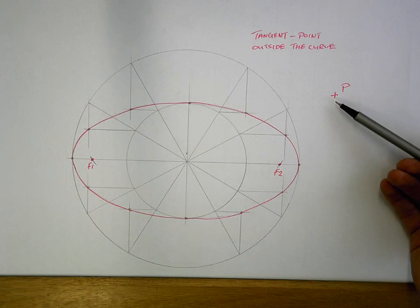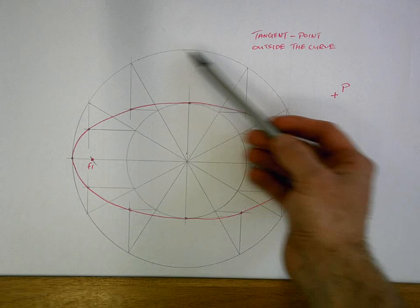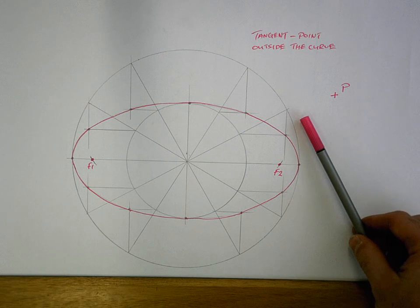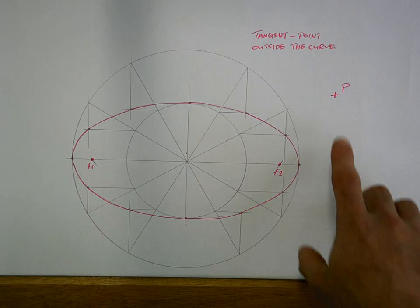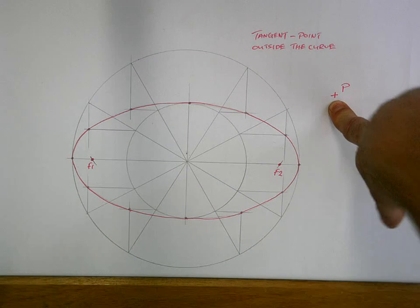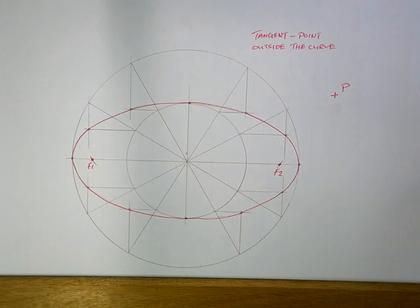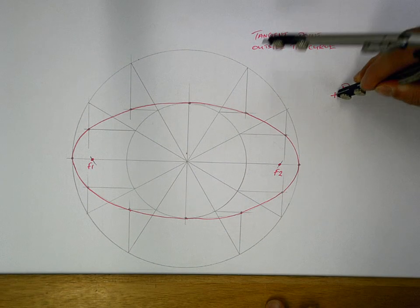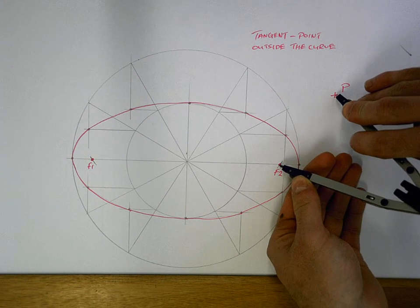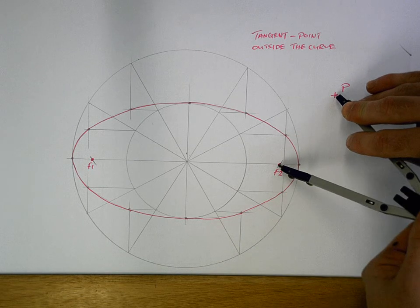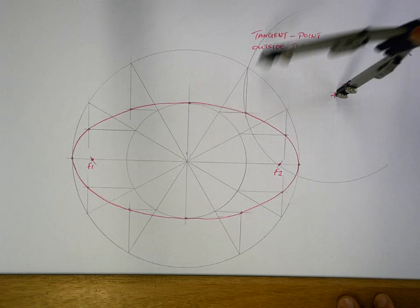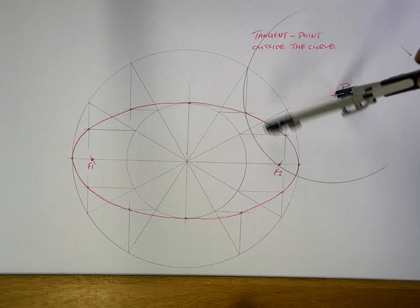Now I've marked off point P here. That could be any location. It probably will be labelled in the actual question, the dimensions of it or wherever else. So the first thing to do, this is all with your compass. Get your compass at point P and go to the focal point that is closest to that point, which is F2 in this case. Strike a large arc, top and bottom.